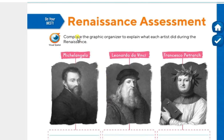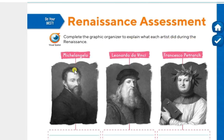This is page 110. This is your best Renaissance assessment. As you can see, you have to complete these exercises. The first one — read with me — it says: complete the graphic organizer to explain what each artist did during the Renaissance. They are three artists mentioned in the text before, that you have to check and write.